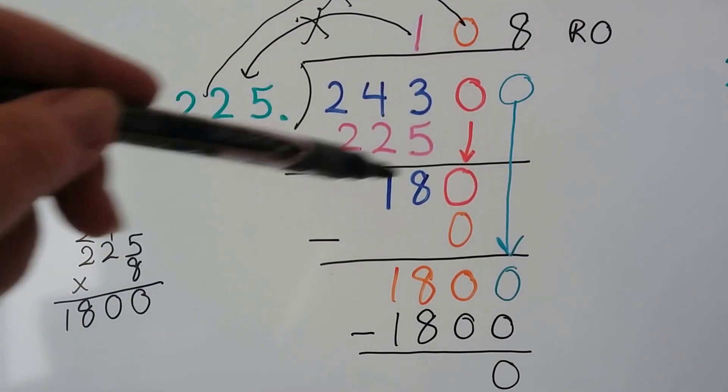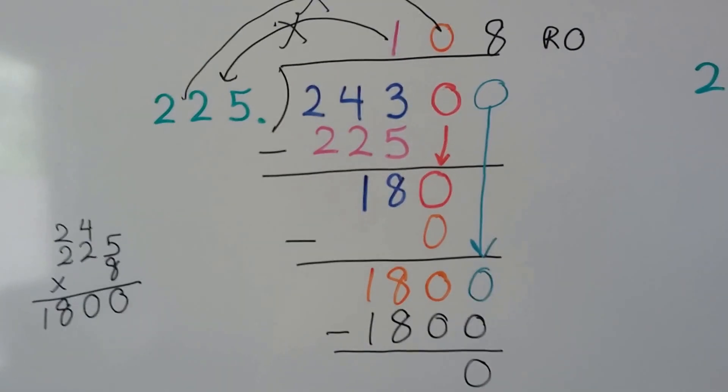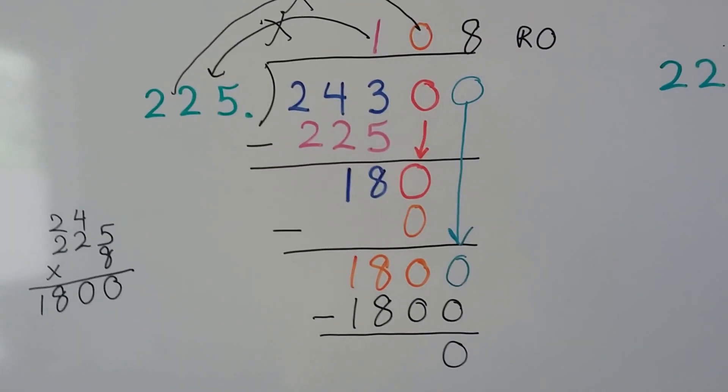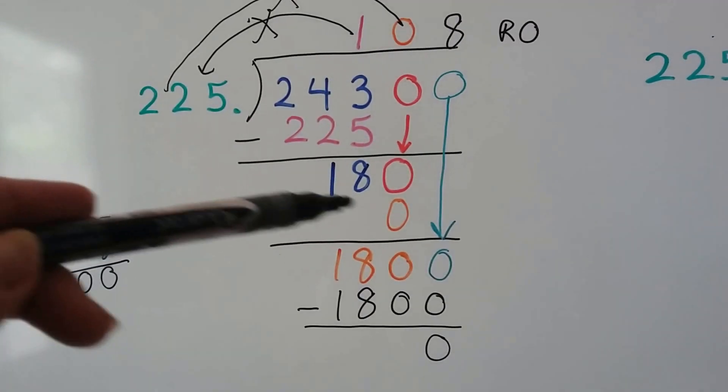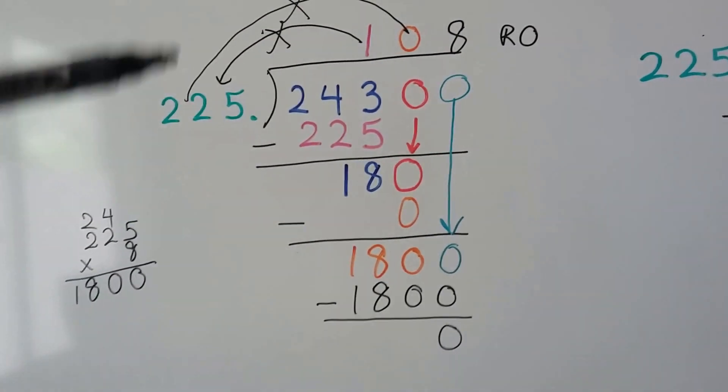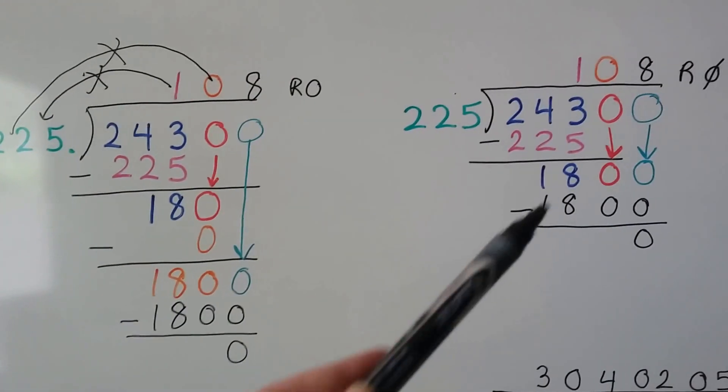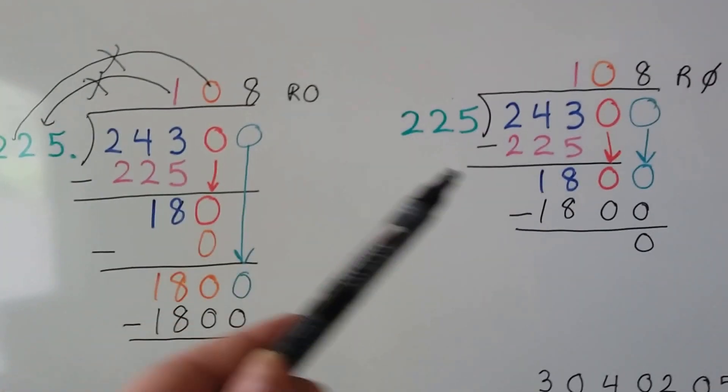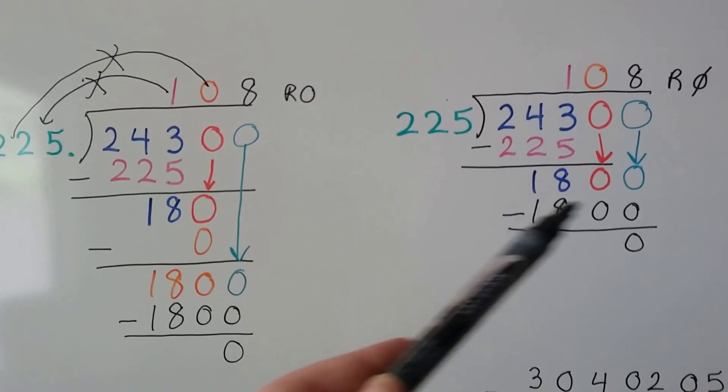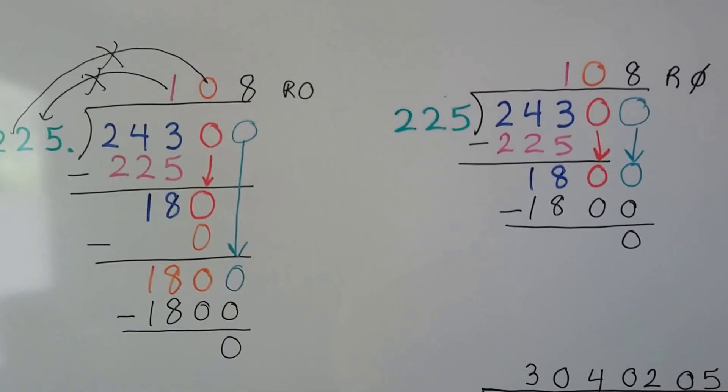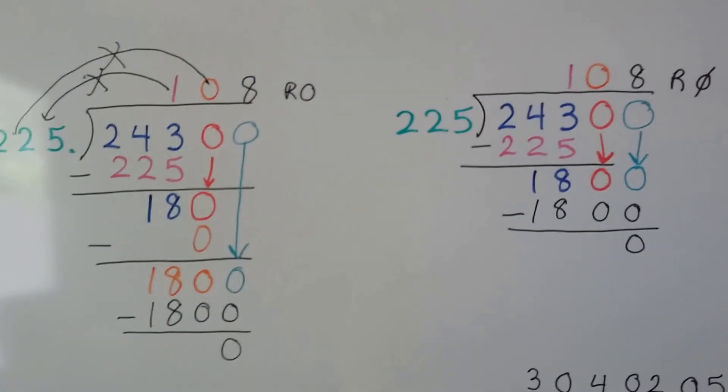Now we didn't have to do this part here. We could kind of shortcut it. If your teacher wants you to show all your work, then you're going to have to do this to show that you multiplied zero times 225. We could have just dropped the zero and said 225 can't go into 180, and then just dropped the other zero and just cut it short.